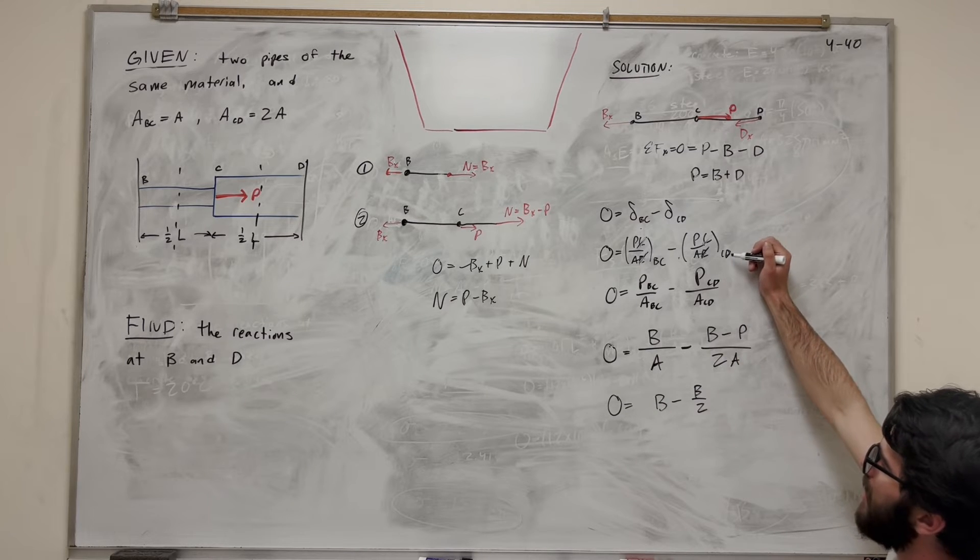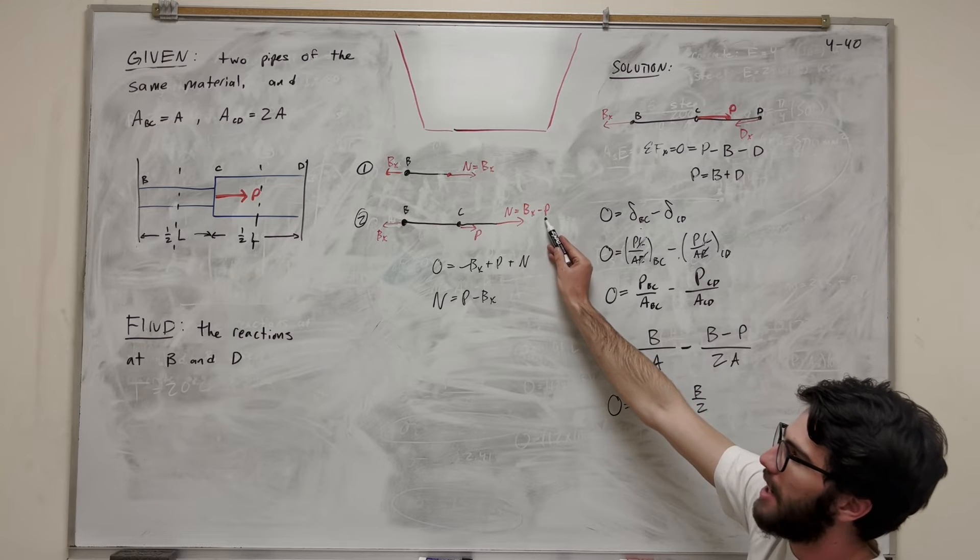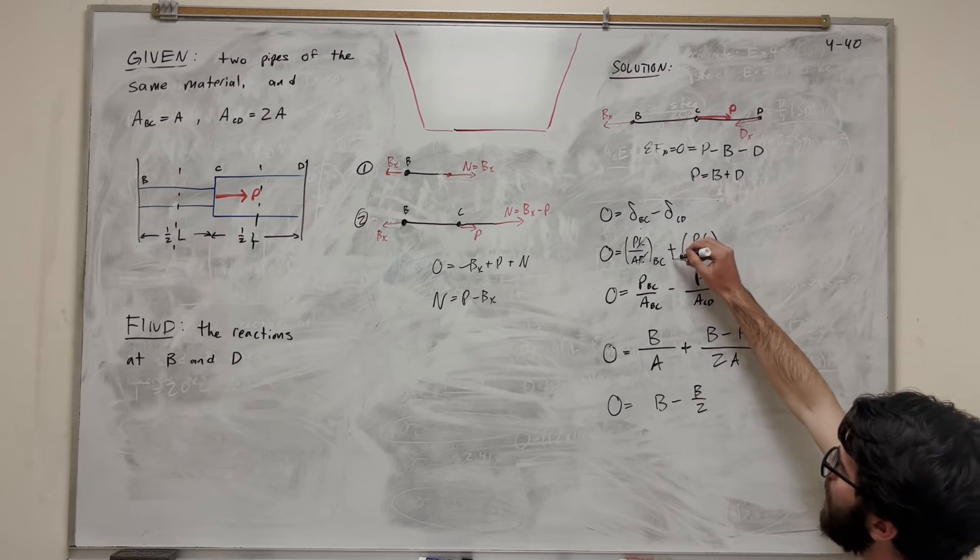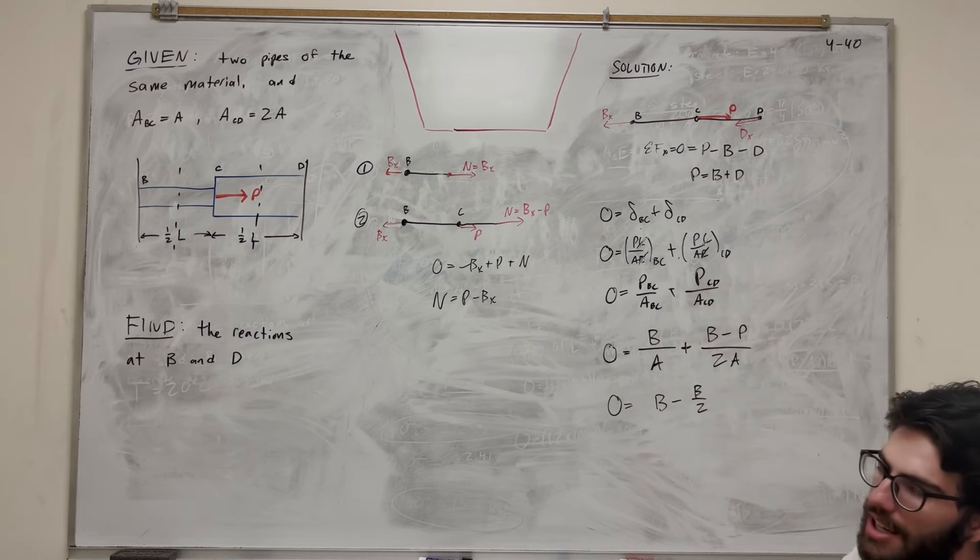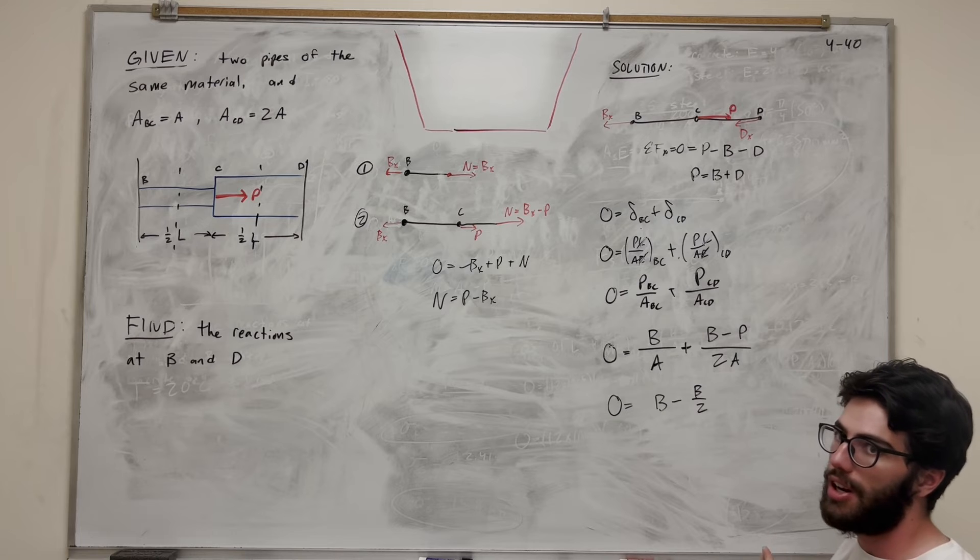But at this point, I already factored for that negative sign when I did the B of X minus P. So at this point, this is basically a positive sign. I mean, I guess at any point here, these could be all positive signs. Just about how you're doing the math. But make sure it's consistent. Otherwise, you're going to end up with a non-logical answer.